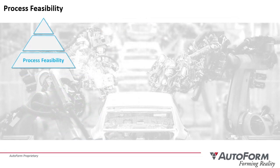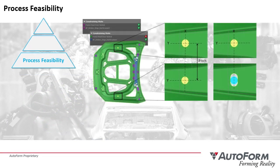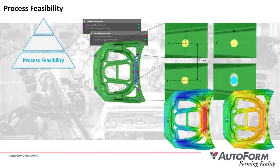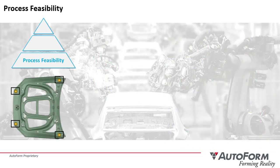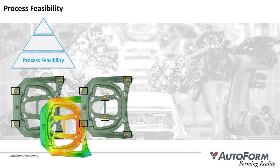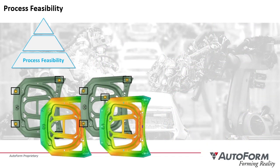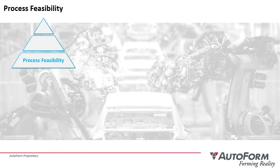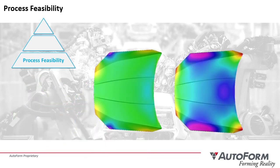During process feasibility, users can study different pilot hole strategies for best part location and test different clamping and joining configurations for optimal results. They can even look at the impacts of different hemming approaches.